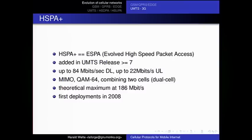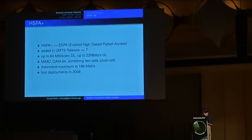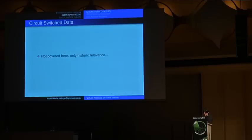HSPA Plus was added in release 7 of the specification and permits up to 84 megabits downlink and 20 megabits uplink by using MIMO techniques, QAM64, and combining two cells simultaneously. A single phone can use two cells at once to extend bandwidth beyond what a single cell could provide, giving a theoretical maximum of 186 megabits. It's quite impressive what they managed to squeeze out by evolving UMTS further without going to LTE.